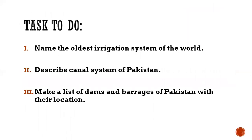Here is a task for you to do in your copy. Name the oldest known irrigation system of the world, then describe the canal system of Pakistan in detail, and make a list of dams and barrages of Pakistan with their locations. For the third answer, make a table — in one column write the dams and in the second column write their location. Make another table for barrages with columns for the barrage name and location.